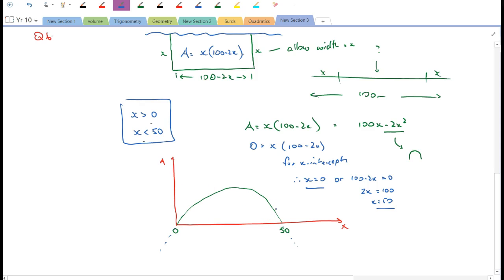Okay, use the graph to determine the maximum paddock area that can be formed. Well, let's use the graph to do that. What's our turning point going to be? Because the maximum area is right there at the turning point. So what's that value there? Well, I know that that value is 25. So my maximum area occurs at x is equal to 25.